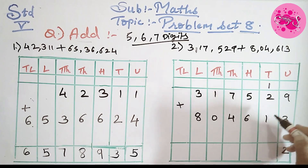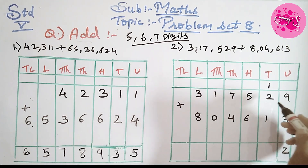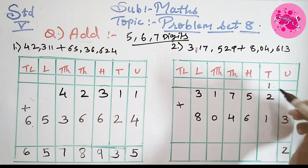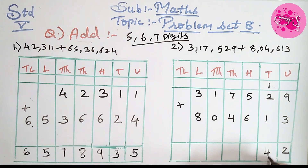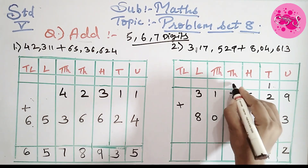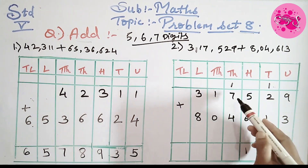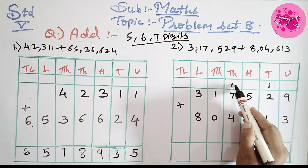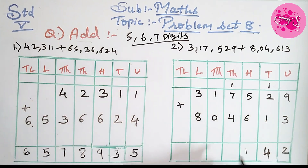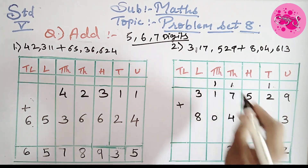So 3 plus 9 we will get 12. So 2 we have to write in the answer column and 1 we have to carry over, because we cannot write 12 directly. So we carry 1 up on the next number. The next number is 1 plus 2 is 3, plus the carried 1 is 4. So write 4 down. Next is 6 plus 5, we get 11. So write 1 down and carry 1. Next, 4 plus 7 we will get 11, and add the carried 1, so 11 plus 1 is 12. Write 2 down and carry 1.